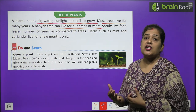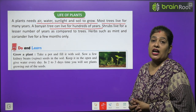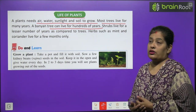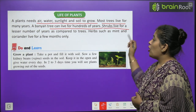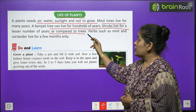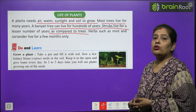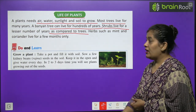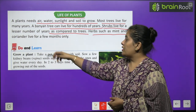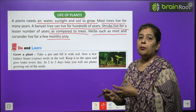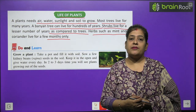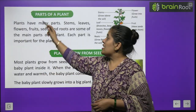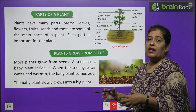The Banyan tree is our national tree and can live for at least a hundred years. Shrubs live for a lesser number of years as compared to trees. Herbs such as mint and coriander live for only a few months.